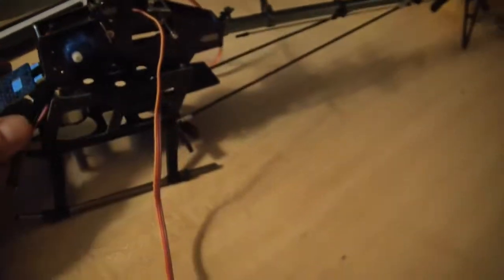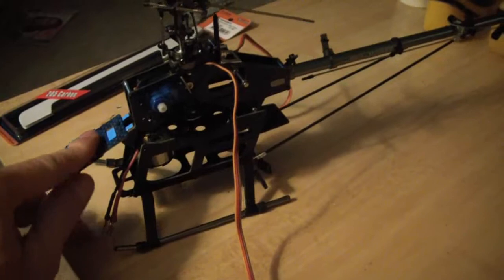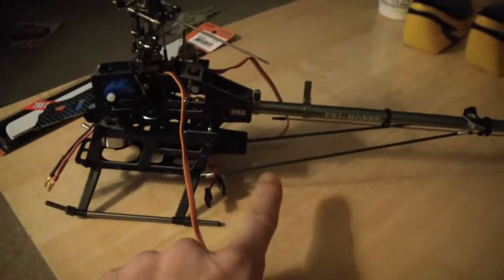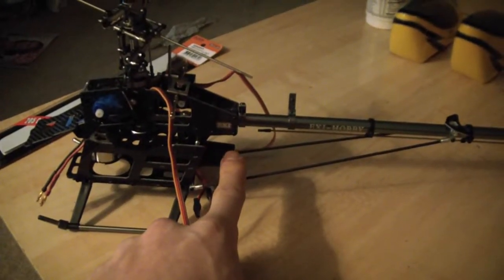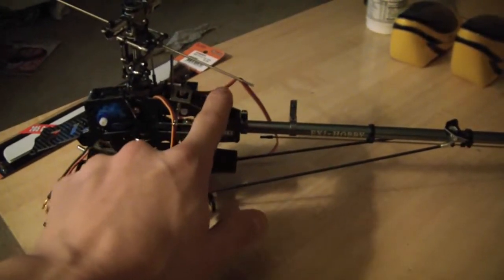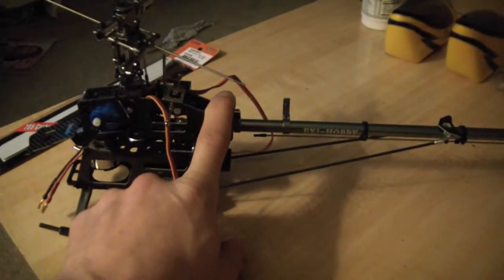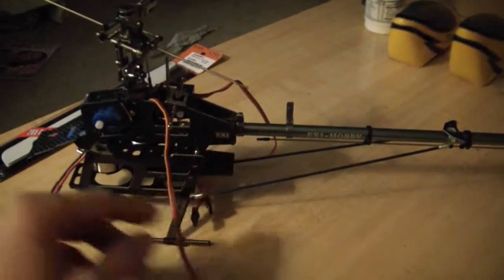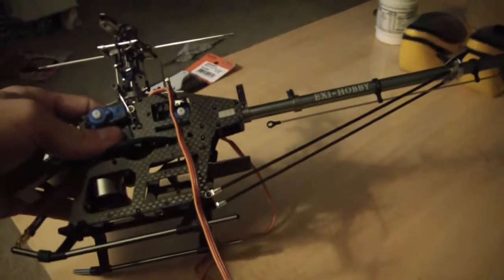So the motor and servos are in, we just need to put in the battery going here, gyro's going to go down here, receiver, not sure, maybe it'll stick right up here. There's really not that much to it.